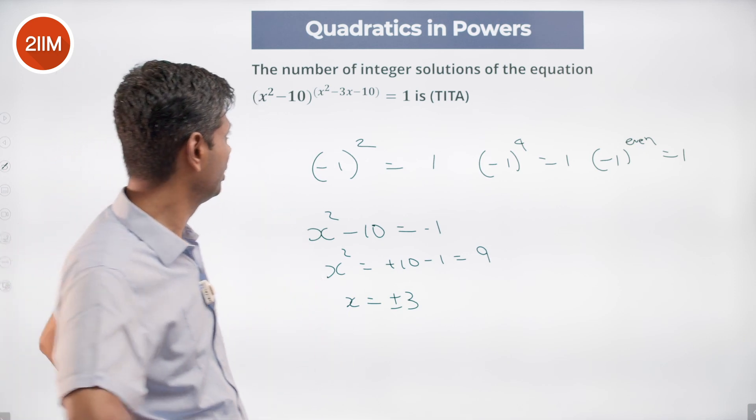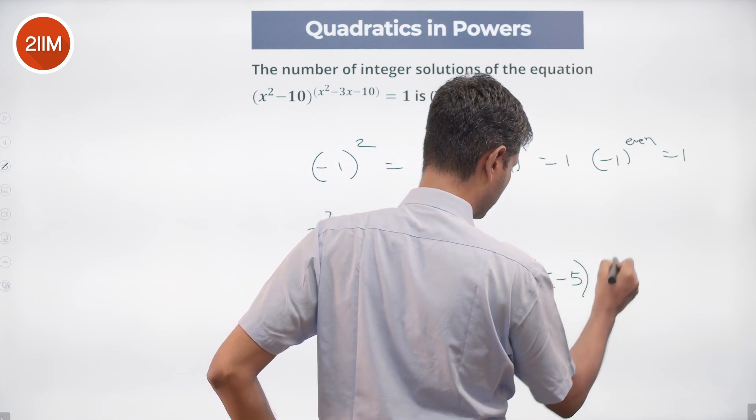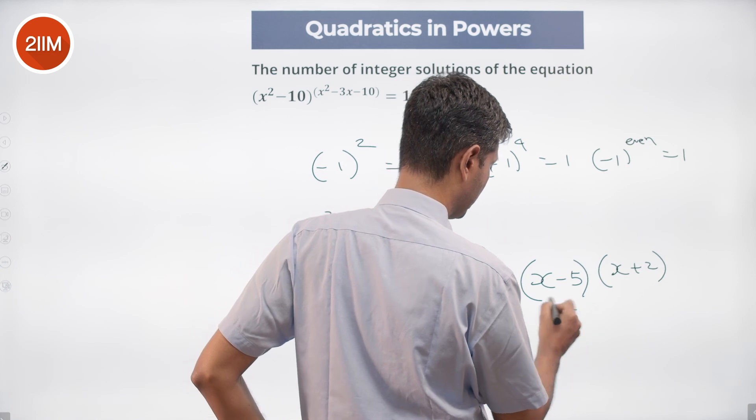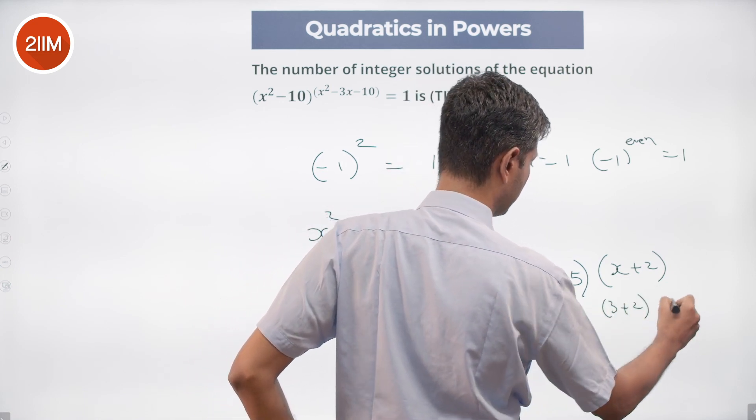I put 3: 3 - 5 times 3 + 2, which is -2 times 5, which is -10. Yeah, that works.